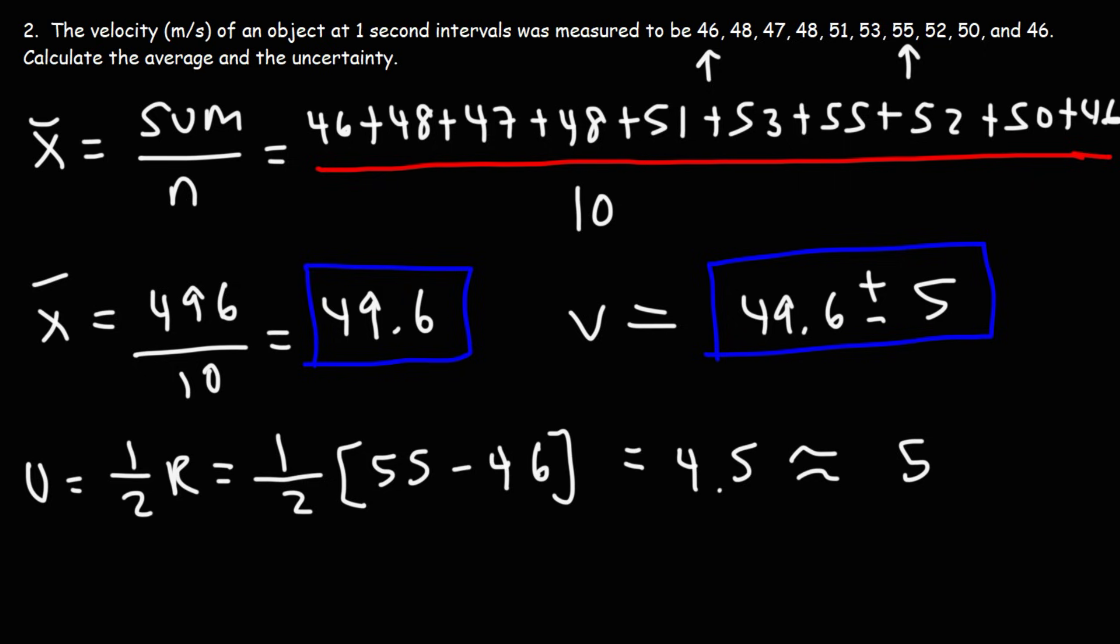And let's see how accurate this is. So 49.6 minus 5, that gives us a lower limit of 44.6. And 49.6 plus 5 gives us an upper limit of 54.6. Now 55 is just outside of this range here. But nevertheless, it's still a relatively accurate representation of this data set. It's not perfect, but it's close to it.